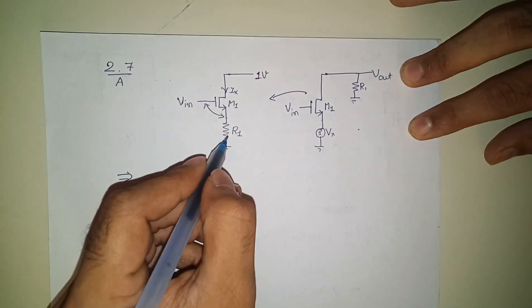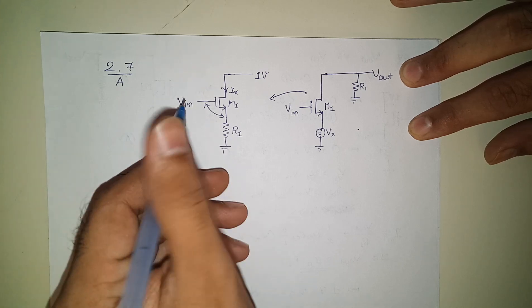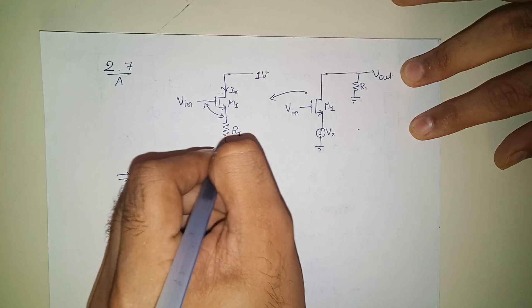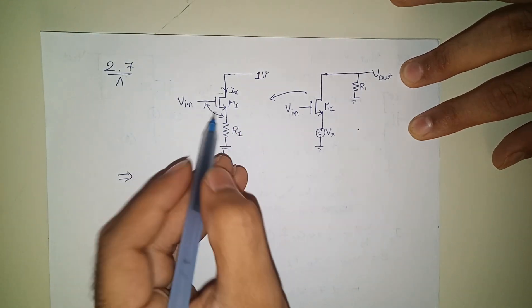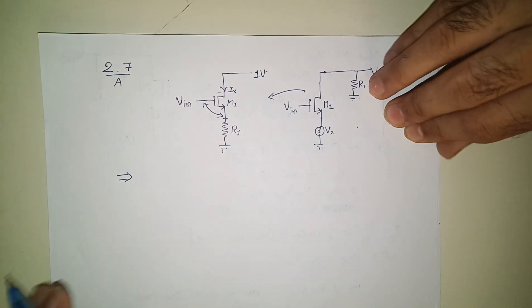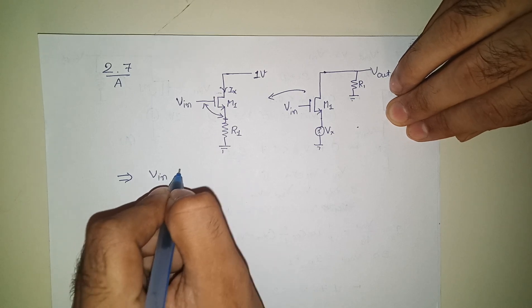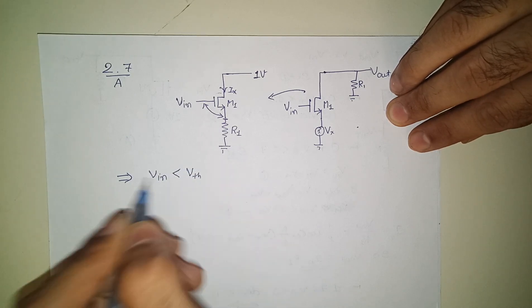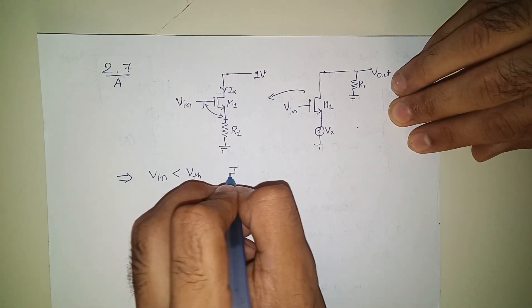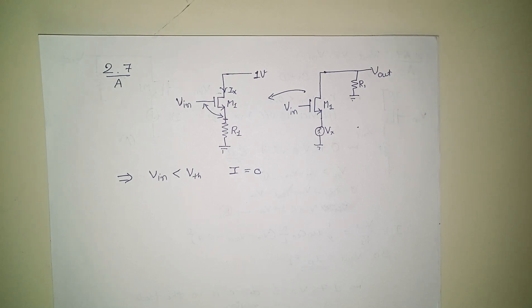So if you will see here, let's say this is I_X. When this device is off, the drop across R1 will be zero. So V_in less than V_th will be I equals zero, isn't it? Now we need to see what will happen to I after the V_th point.